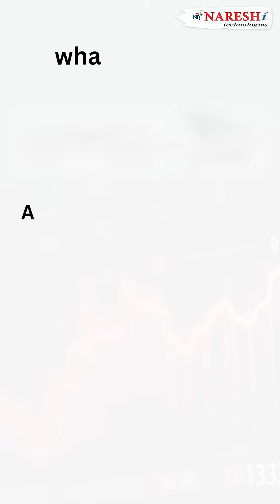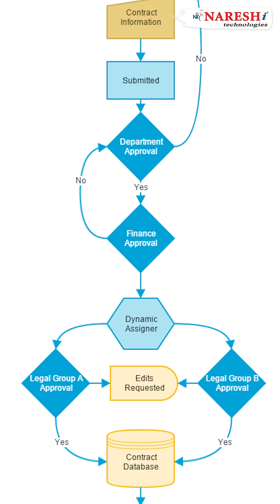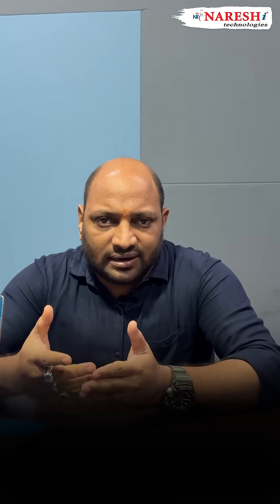What is a node? A node is a step in the process, for example a call to a language model or tool. An edge defines how the process flows from one node to another. Using state, we share memory between steps like messages, variables, and tools. End is a special keyword to end the execution.